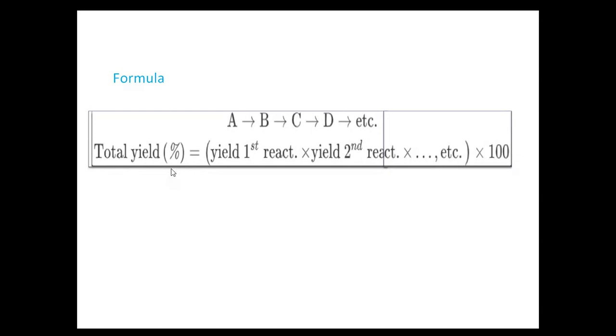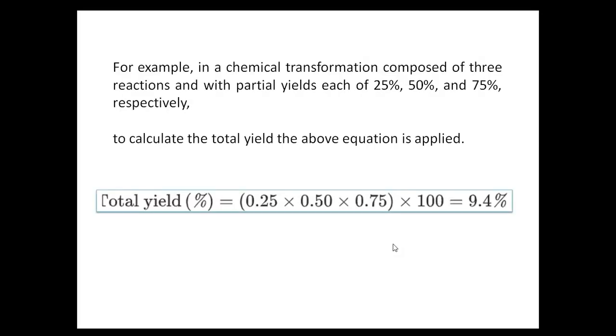To calculate the total yield: total yield equals yield of first reaction times yield of second reaction times etc., then multiply by 100.